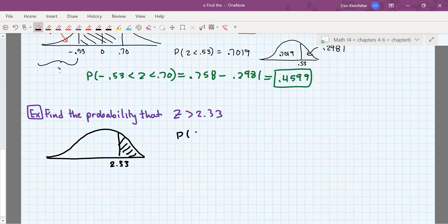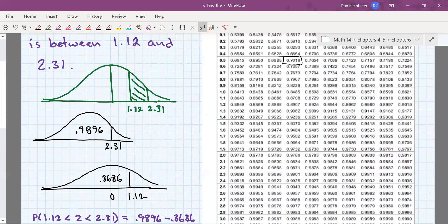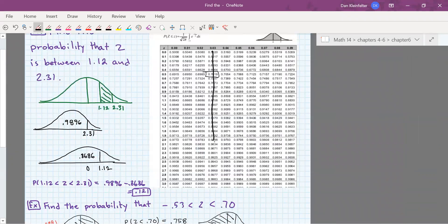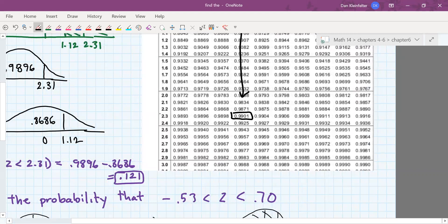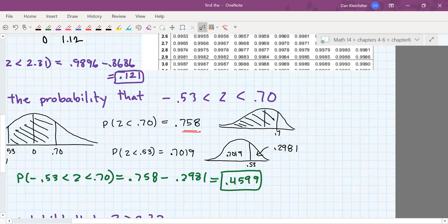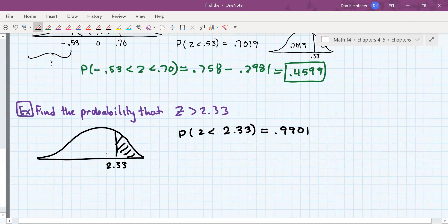So looking in our table, the probability that z will be less than 2.33, referring to our table, 2.3 and the three column, 2.33 is 0.9901. That's the area to the left of 2.33. So then its complement is going to be 0.0099.